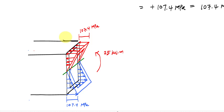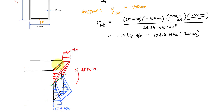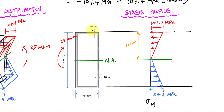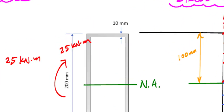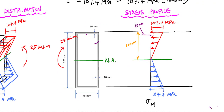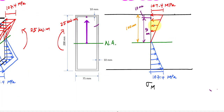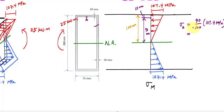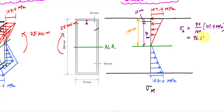That's what the 3D stress profile looks like due to the bending moment. It's more convenient to draw a 2D stress profile — we only see the side of it. Here's my normal stress profile due to the bending moment. If I wanted to calculate the normal stress at the bottom of the flange, which is 10 millimeters from the top, that location is 90 millimeters from the neutral axis — call that point A. Using similar triangles: 90 over 100 times 107.4 gives the normal stress at point A as 96.66 MPa in compression.